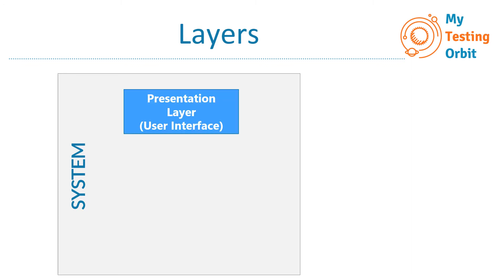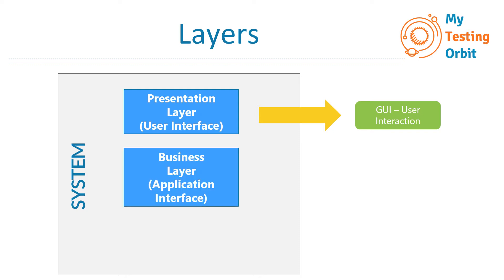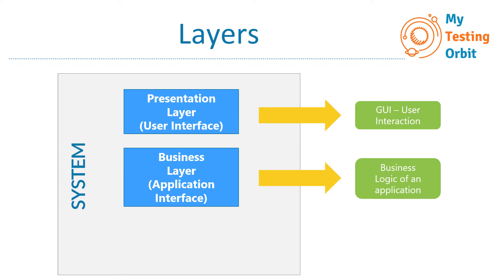Now let's have a look at how the layers in a specific system work. If we have a system, the top layer would be the presentation layer, which is also known as the user interface — or GUI, Graphical User Interface. This is where you interact with the interface of the system. Then comes the business layer, which is also known as the application interface. This is where the business logic of an application resides — all the logic of how the application will work — and this is also the place where APIs reside.